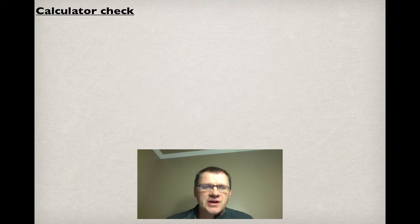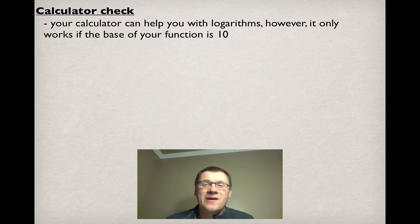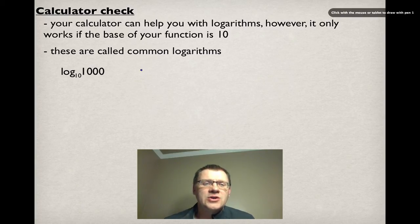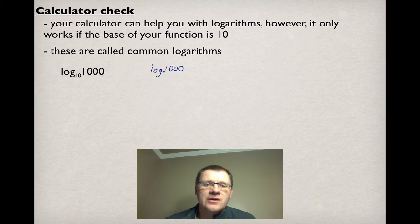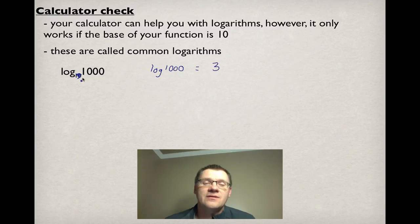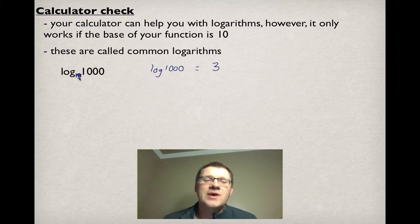Let's do a quick calculator check. Your calculator can help you with logarithms; however, it only works if the base of your function is 10. These are called common logarithms. You can use your log button on your calculator, but your base needs to be 10. For example, log base 10 of 1,000 — we can just write log 1,000 into our calculator. The 10 we don't have to write at all; whenever it's base 10, we just assume it. So log of 1,000 typed into your calculator gives you 3. Eventually in this course we'll show you how to change every question so you have a base of 10, but for now, you can't use it unless your base is 10.